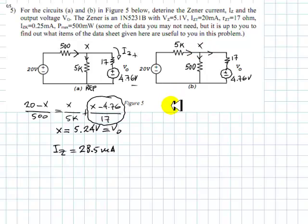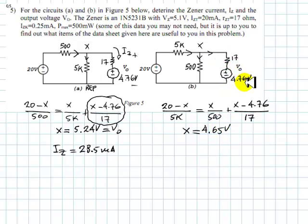And that is the output voltage. What about the second one? The same solution pattern. We write a KCL equation here. Same way as before. 20 minus X divided by 5 kilos, and that is equal to this current X over 500, plus the current in the diode, X minus 4.76 divided by 17 ohms. And then we solve for X. When we solve that equation, we find that the voltage here is 4.65 volts. That is less than this voltage. That is impossible. Because that would be possible only if the current in the Zener was flowing in the other direction, which is not happening.